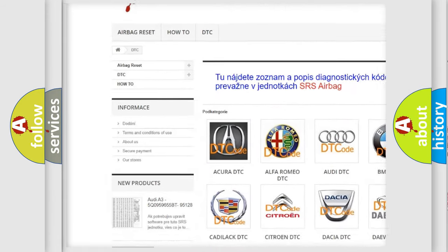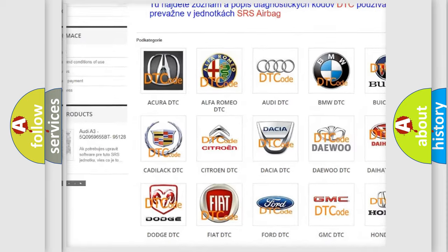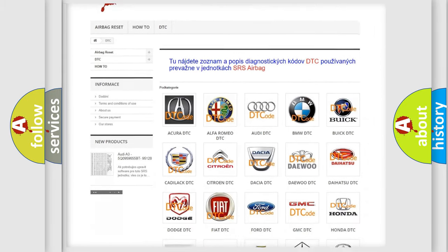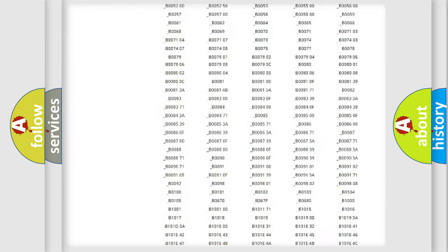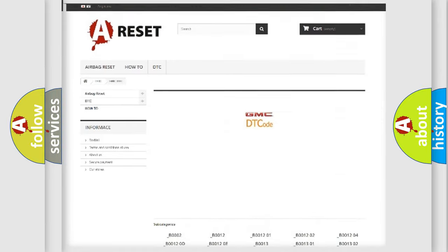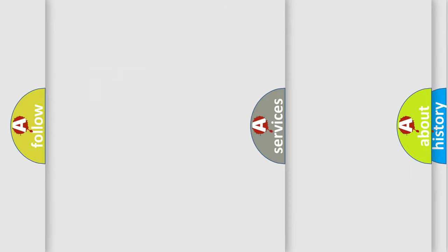Our website airbagreset.sk produces useful videos for you. You do not have to go through the OBD2 protocol anymore to know how to troubleshoot any car breakdown. You will find all the diagnostic codes that can be diagnosed in GMC vehicles. Also many other useful things.